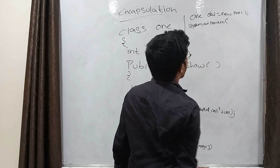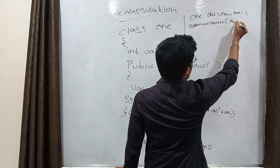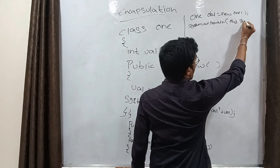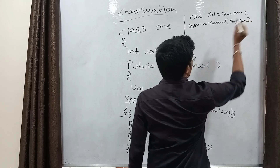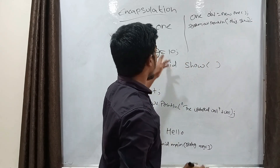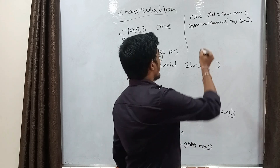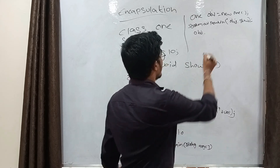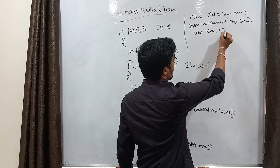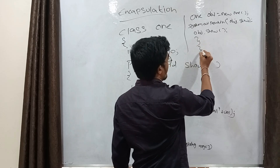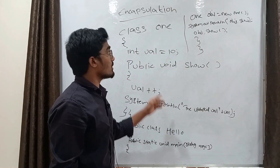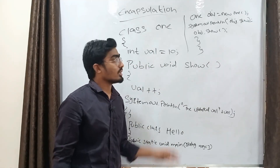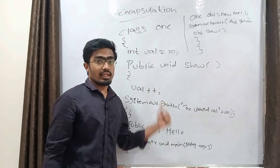We can print using the object with the method name. We take the object name dot method name — which is 'show' — so object dot show. By calling this, we invoke the method and print the updated value. This is the program for encapsulation — through this program we can provide data security.